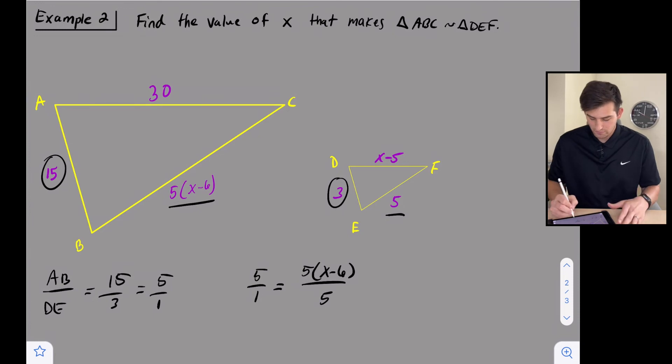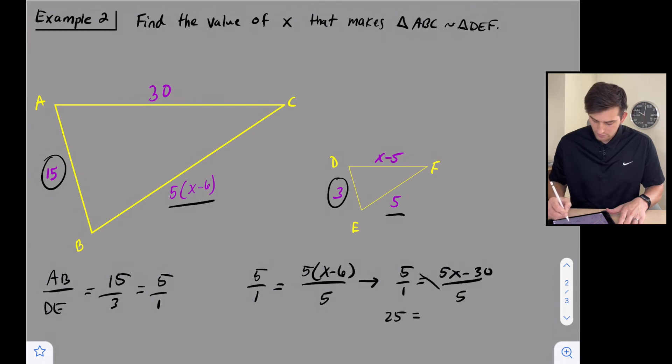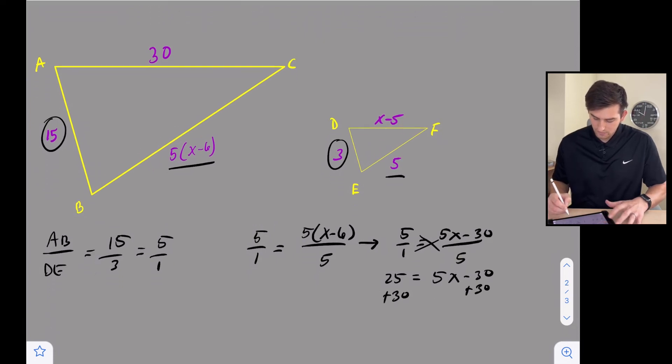Now we can cross multiply. So if we simplify this side first, let's do 5 over 1 equals, let's distribute this 5, so 5X minus 30 over 5. Now we cross multiply. So we get 25 equals 5X minus 30. We can add 30 to both sides. So let's scroll down a little bit. This gives us 55 equals 5X. We can divide by 5 and we get X equals 11.